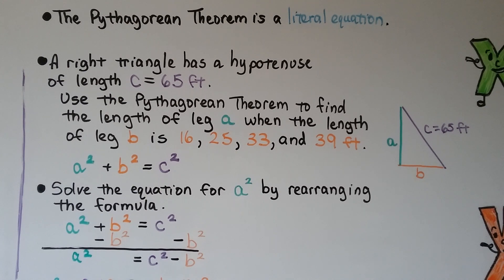We can use the Pythagorean theorem to find the length of leg a when the length of leg b is 16, 25, 33, and 39 feet. So we start with a squared plus b squared equals c squared. That's the Pythagorean theorem.